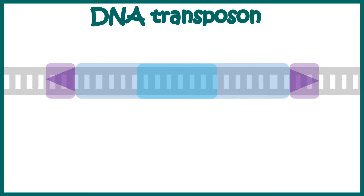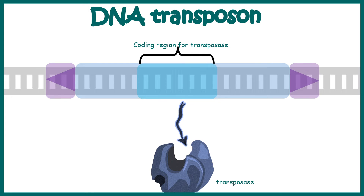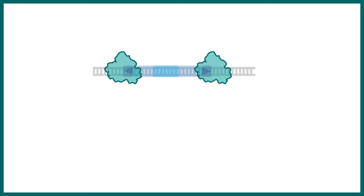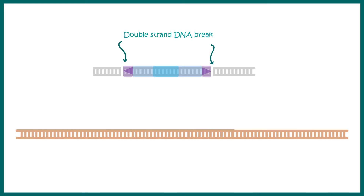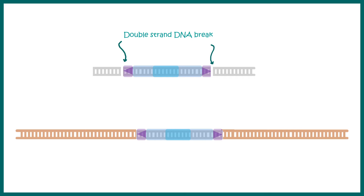Let's talk about DNA transposons first, which have a particular region known as the transposase coding region, which codes for the transposase enzyme. Apart from that, the other feature is the terminal inverted repeats, which are recognized by the transposase. The transposase enzyme recognizes the inverted repeats at the terminals, cleaves the DNA, and creates a double-stranded DNA break. These transposable elements can then be integrated to a new region in the genome, and thereby jump from one location to another.